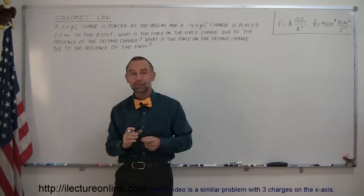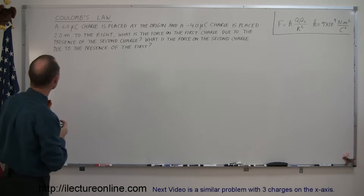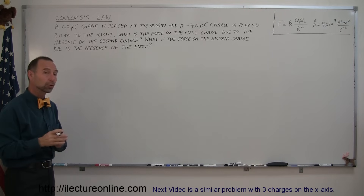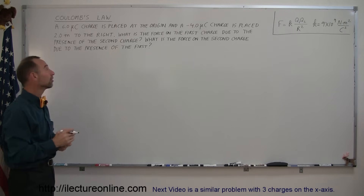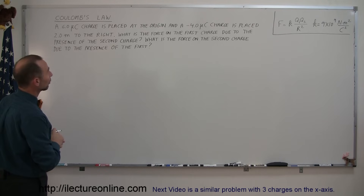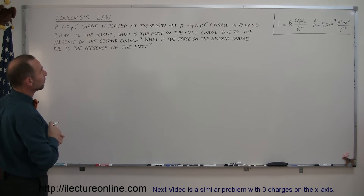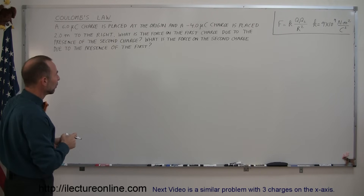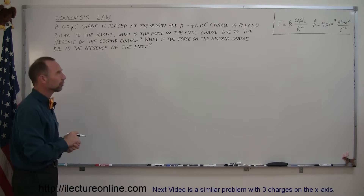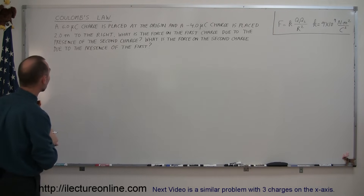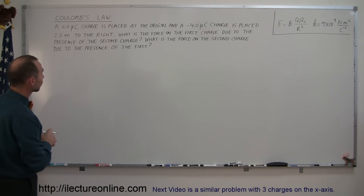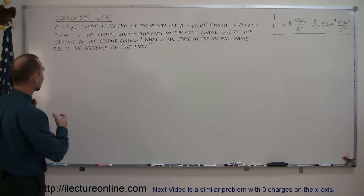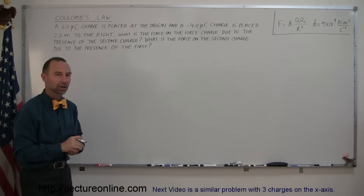Here's our problem: a 6 micro Coulomb charge — and micro Coulomb is 10 to the minus 6 Coulombs — is placed at the origin, and a minus 4 micro Coulomb charge is placed 2 meters to the right. What is the force on the first charge due to the presence of the second charge, and what is the force on the second charge due to the presence of the first charge?